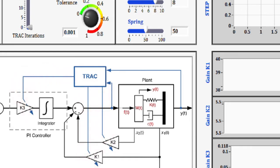The following demonstration shows a sample application of TRAC to the position control of a mass-spring-damper system with a control law consisting of a full state feedback and a PI controller that eliminates the steady state error.